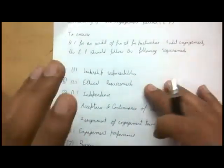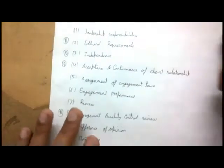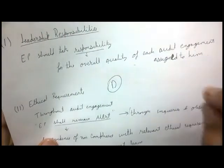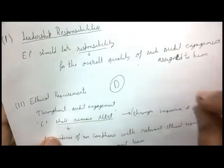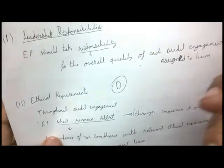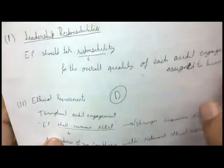The first responsibility is leadership: the engagement partner should say 'I am responsible for the quality of the audit.' The engagement partner should take responsibility for the overall quality of each audit engagement assigned to him — whether that is BMW or Maruti Suzuki, he is responsible for the quality of that audit.